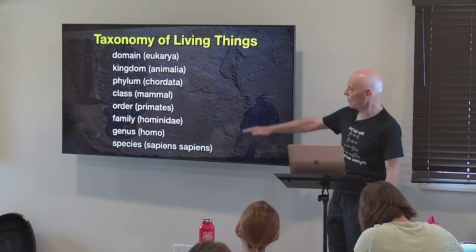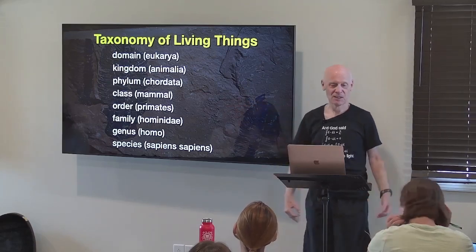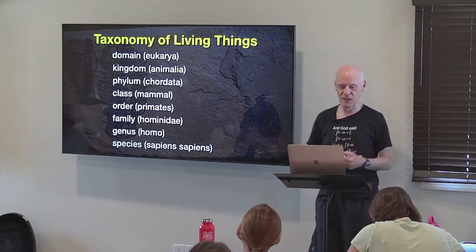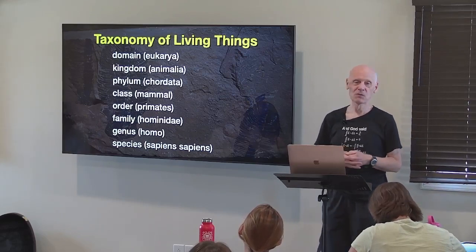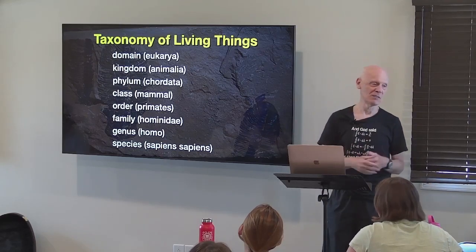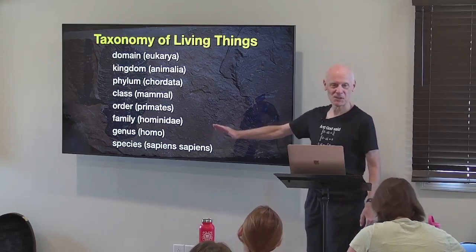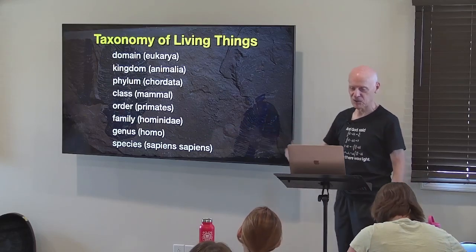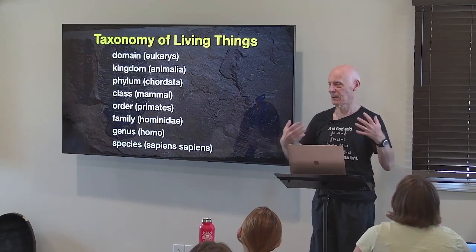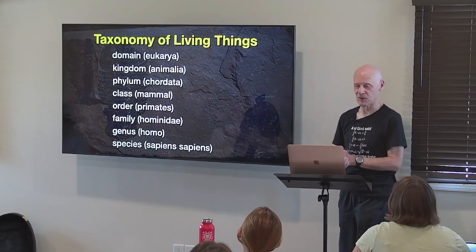We belong to the mammal class, the primate order, and the hominid family. The genus is Homo, and the species is Homo sapiens sapiens. Sapiens means 'thinking hominid,' and the joke in anthropology is we humans think twice — Homo sapiens sapiens — to distinguish us. The term Homo sapiens actually includes Neanderthals, the Denisovans, and Homo erectus, but we are a distinct species: Homo sapiens sapiens.